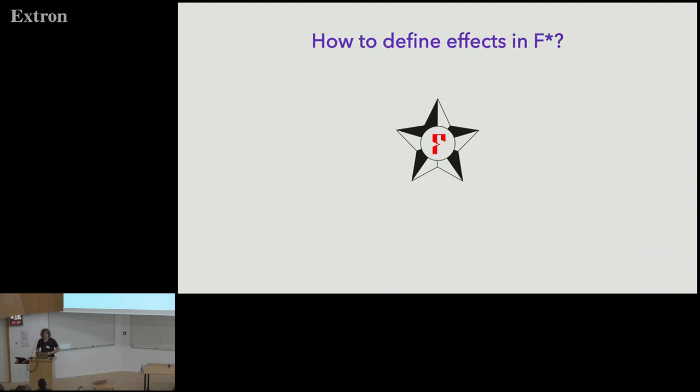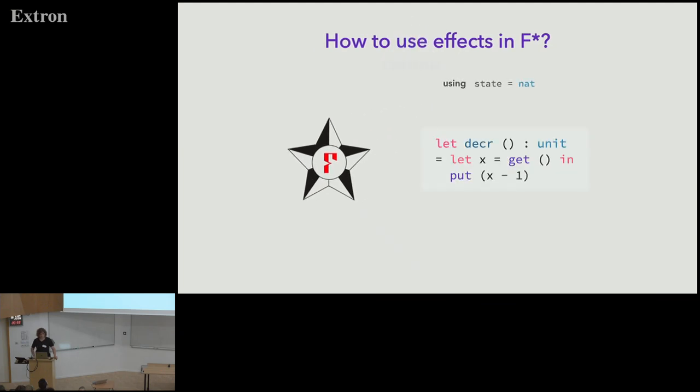The question that we wanted to answer in this talk is essentially how to define effects in the programming language F-star. But first I will show you how we use effects in F-star. So let's say you want to write a stateful program that just decreases the state. So assuming the state is just a natural number, you just get the state and put in the state x-1. Then in F-star you would annotate your return type with the fact that you use the effect state which we write as ST.